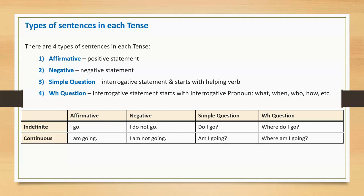Similarly, present continuous affirmative: I am going. Present continuous negative: I am not going. Simple question: am I going? WH question: where am I going?